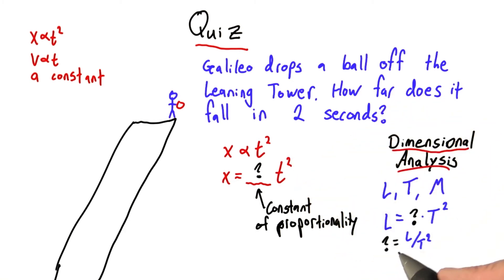Solving for my question mark, I find that the units of this unknown constant are length over time squared.